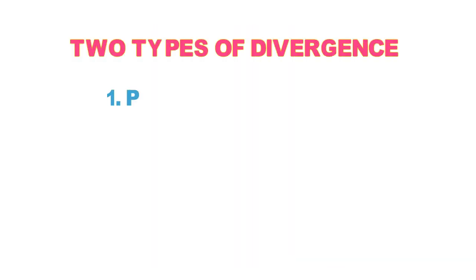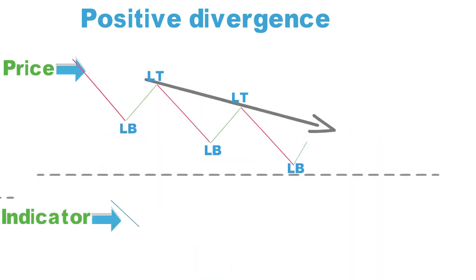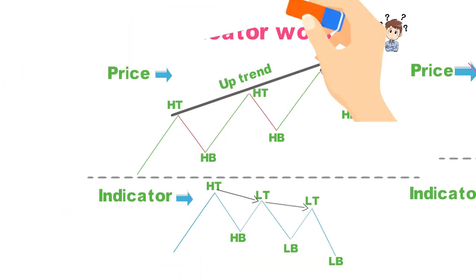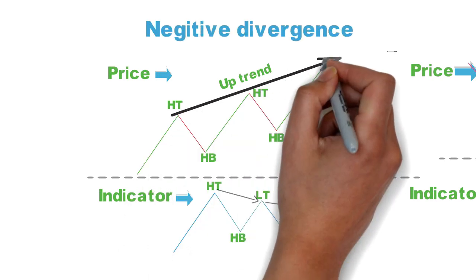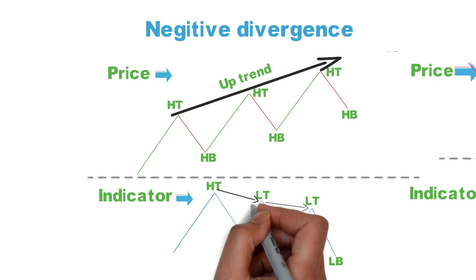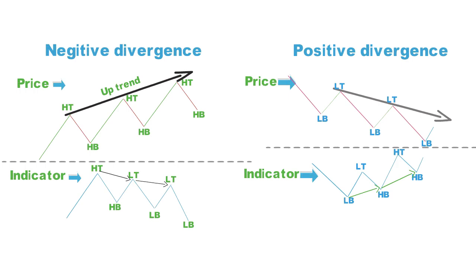There are two types of divergence. Positive divergence means when price makes lower highs and lower lows, but the indicator is making higher highs with higher lows. Negative divergence is the reverse — when price makes higher highs and higher lows but the indicator is making lower highs with lower lows. This is how positive and negative divergence are formed.